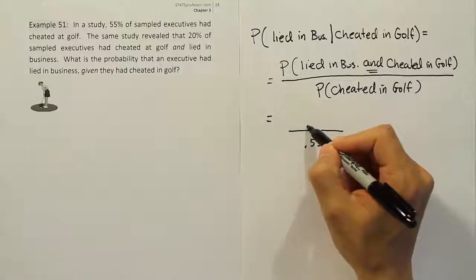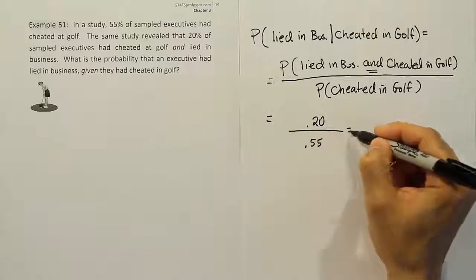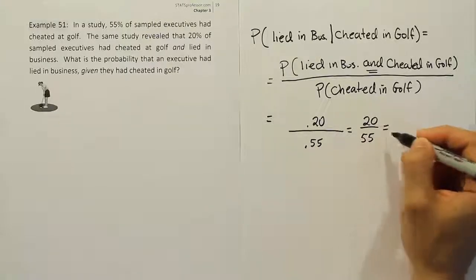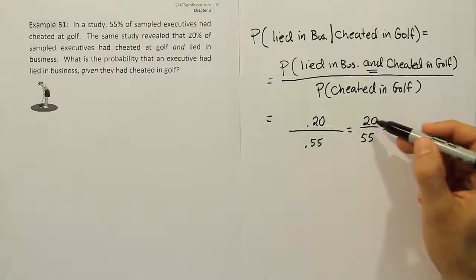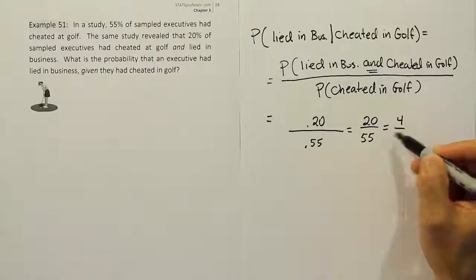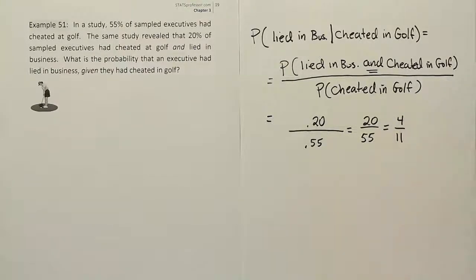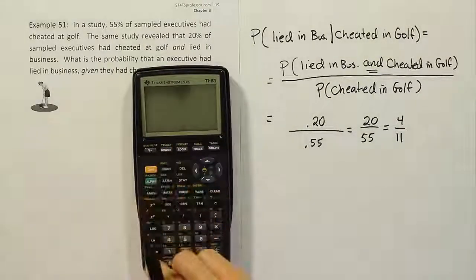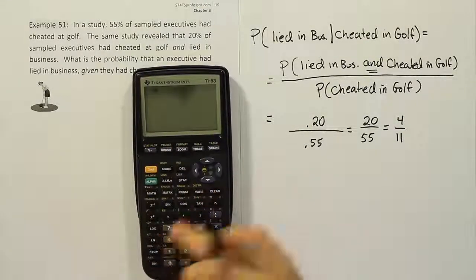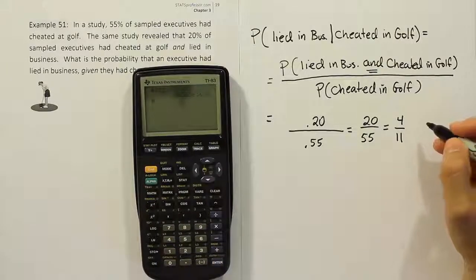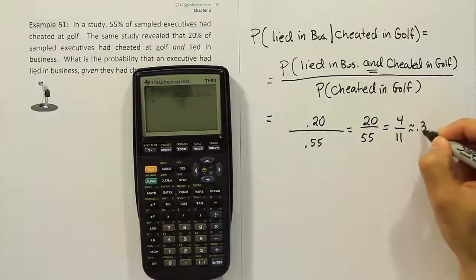And then the top part, lied in business and cheated at golf. Well, it says the same study revealed that 20% of sampled executives had cheated at golf and lied in business. So there's our 20%. And so basically that's the same as 20 over 55. Then you can put 5 into 20 four times evenly. You can put 5 into 55 eleven times. So your answer is 4/11, or if you want to divide that out and get the decimal, it is 4 divided by 11, which is 0.364 approximately, or about 36.4%.